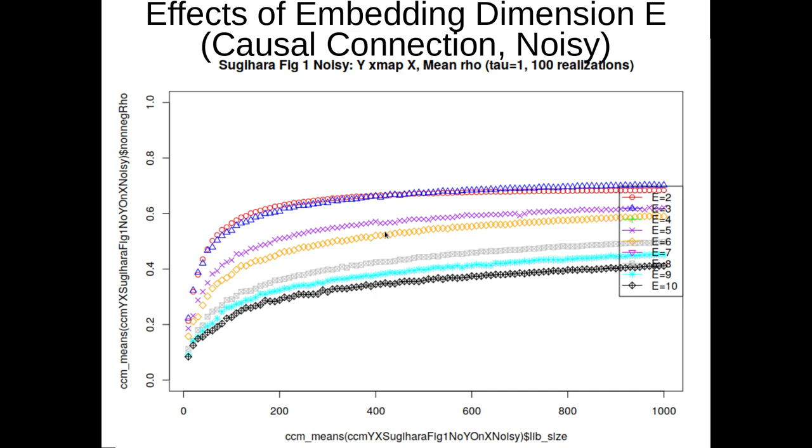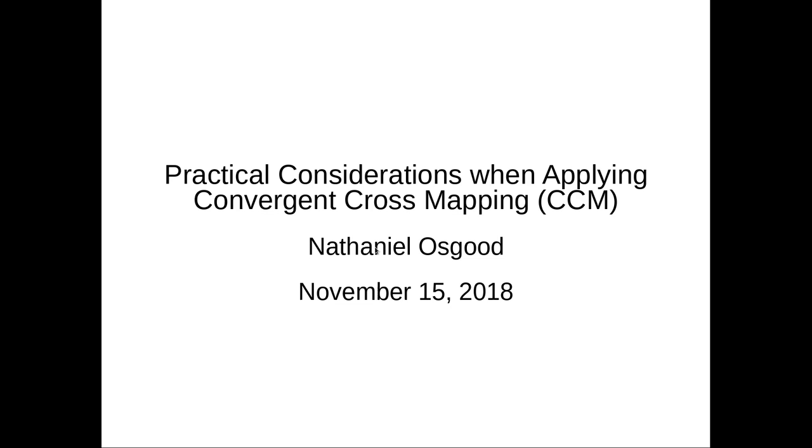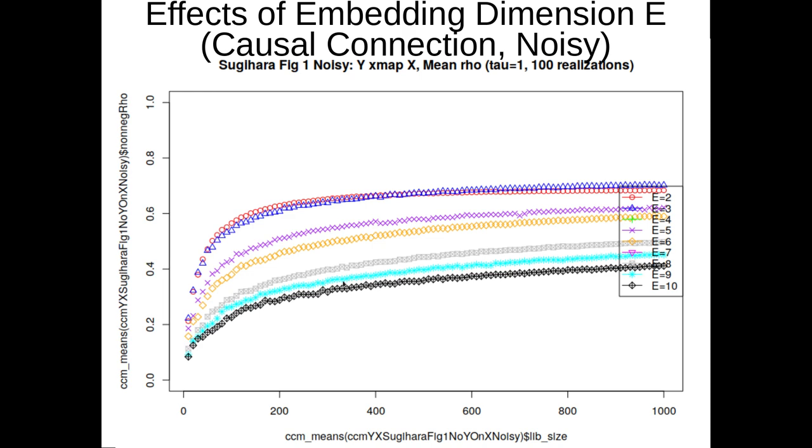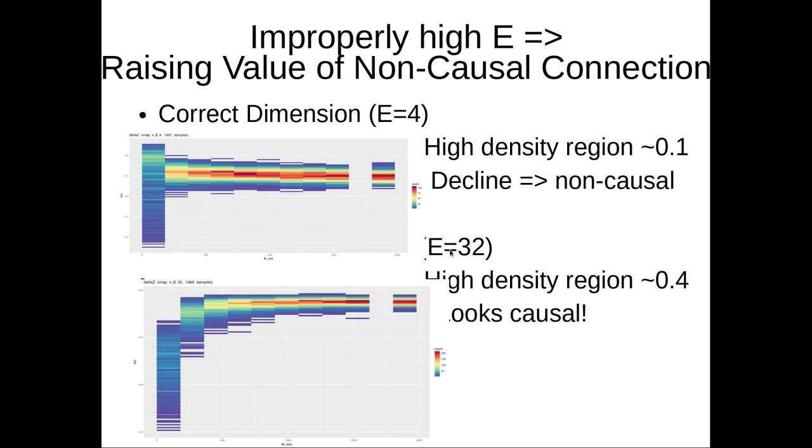Let's talk about the effect of E. E can change the mean, can lead to changed results in terms of the value of rho found. This is sort of an appropriate E, and you can see if you have an E that's much larger. This is the correct E of 4, this is an E of 32. It converges, it just converges more slowly.